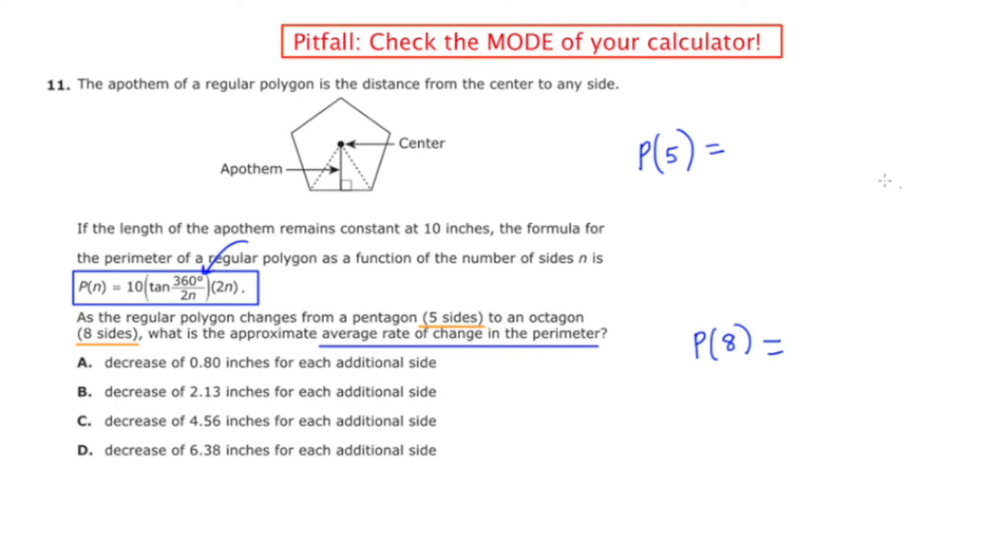So for now, let's get prepared for the calculator by plugging in 5 for every occurrence of n.